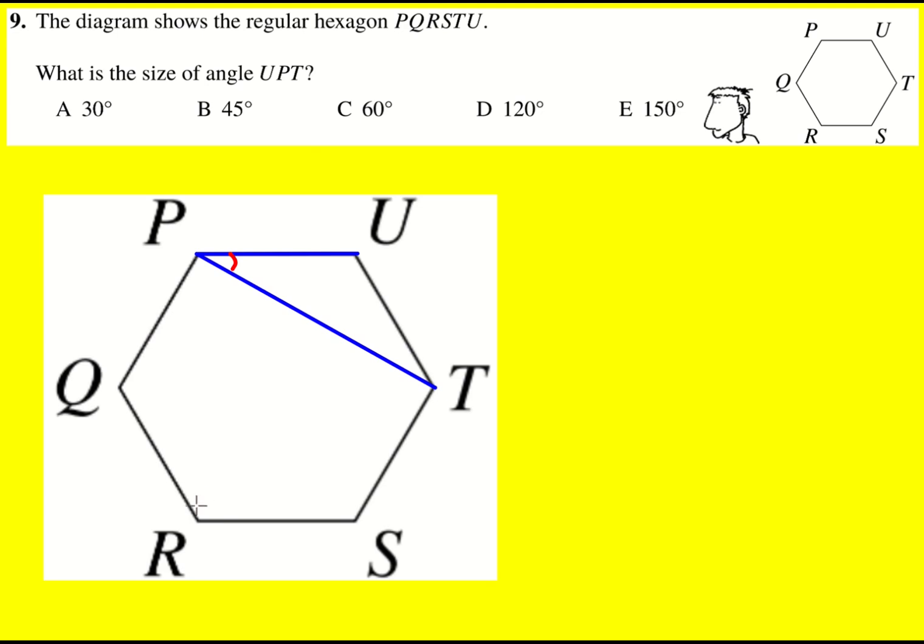Now in a regular hexagon, the angles are all 120 degrees. That's actually worth knowing, a bit like in the square to learn that it's 90. In a pentagon, 108. A hexagon, 120. I do recommend learning those if you like to do these sorts of competitions.